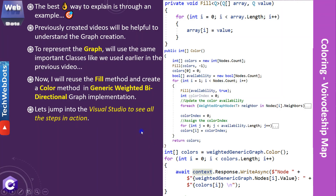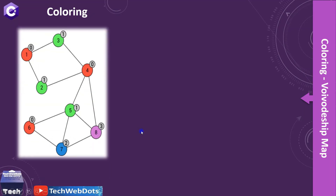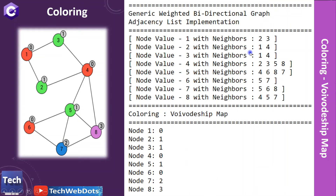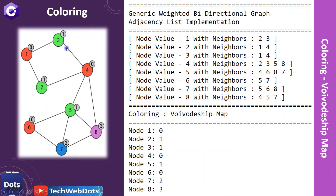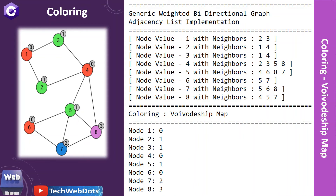Going back to the presentation: this was the graph we discussed and this was our output. For node 1 we have 0, node 2 has 1, node 3 has 1, node 4 has 0, node 5 has 1, node 6 has 0, node 7 has 2, and node 8 has 3. This is how we achieve coloring — or numbering — in the graph data structure.